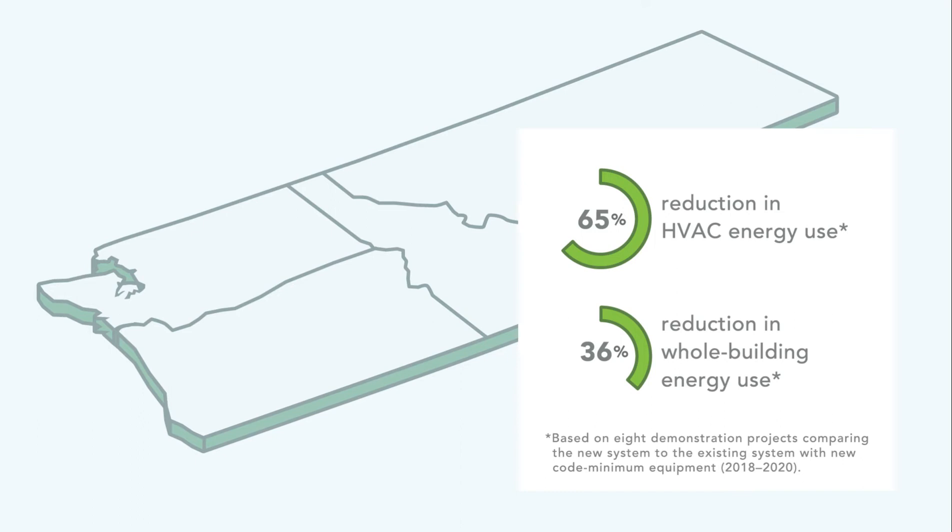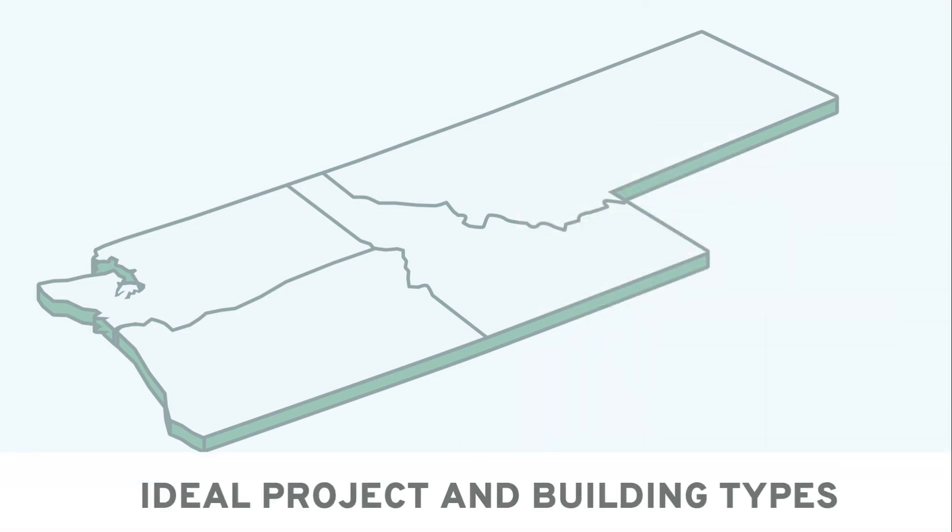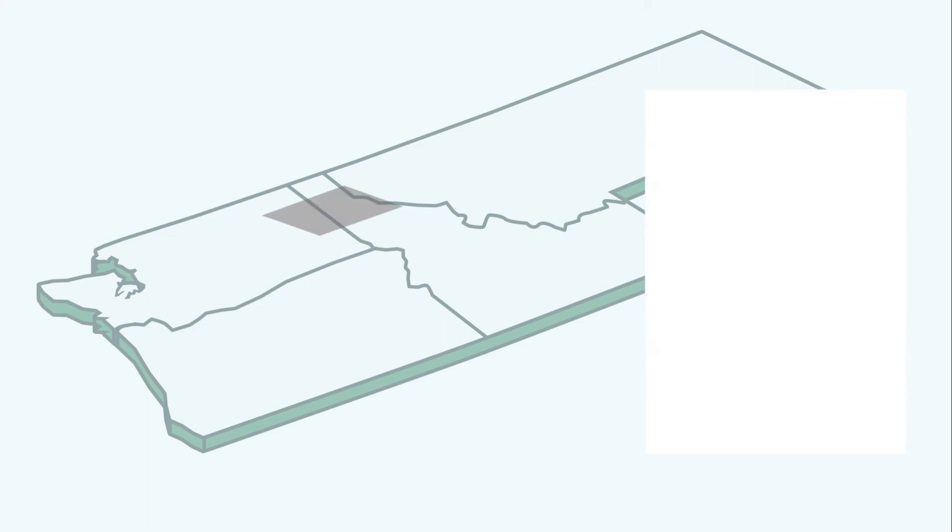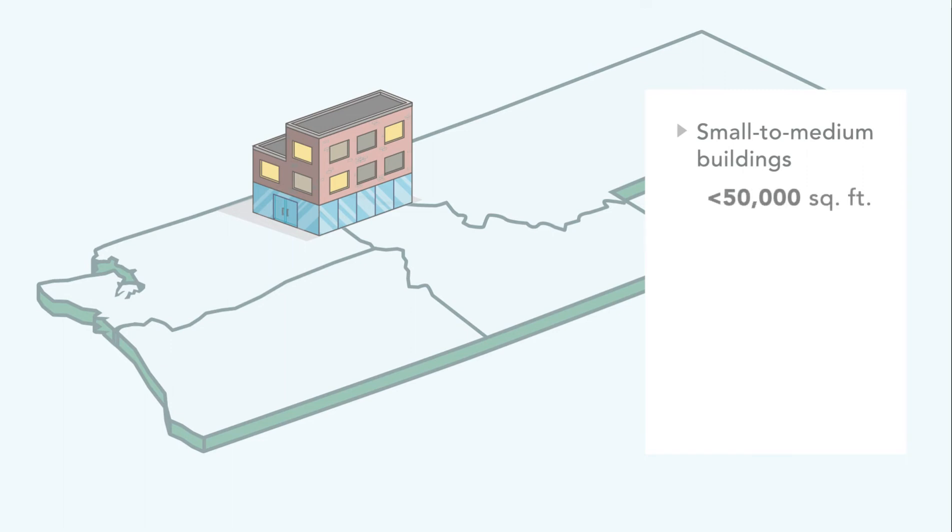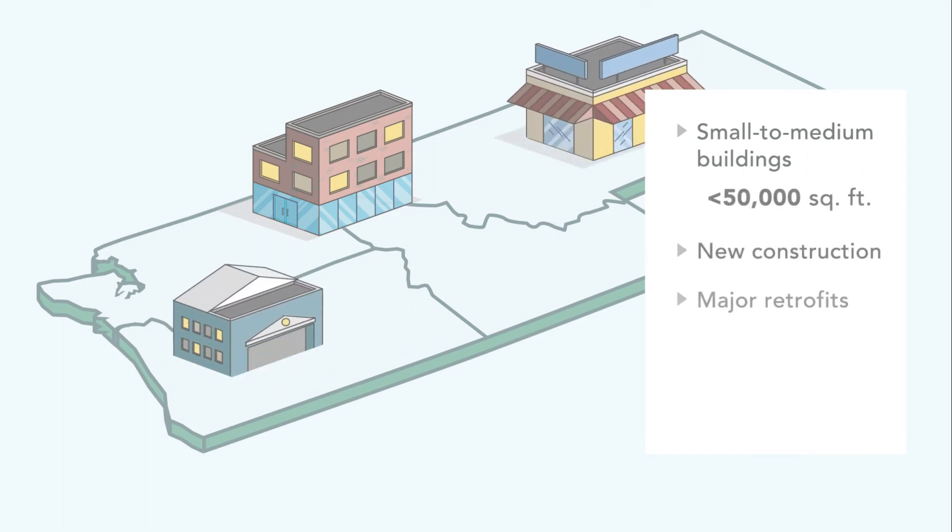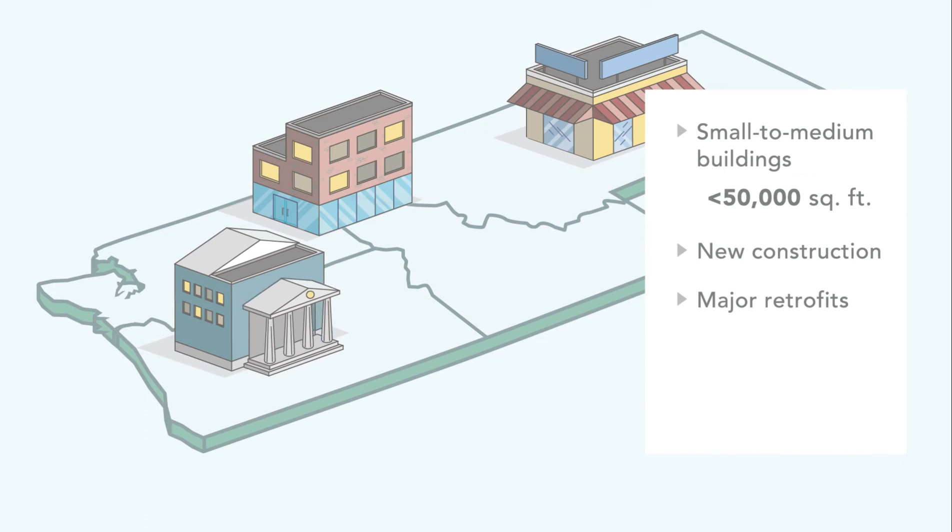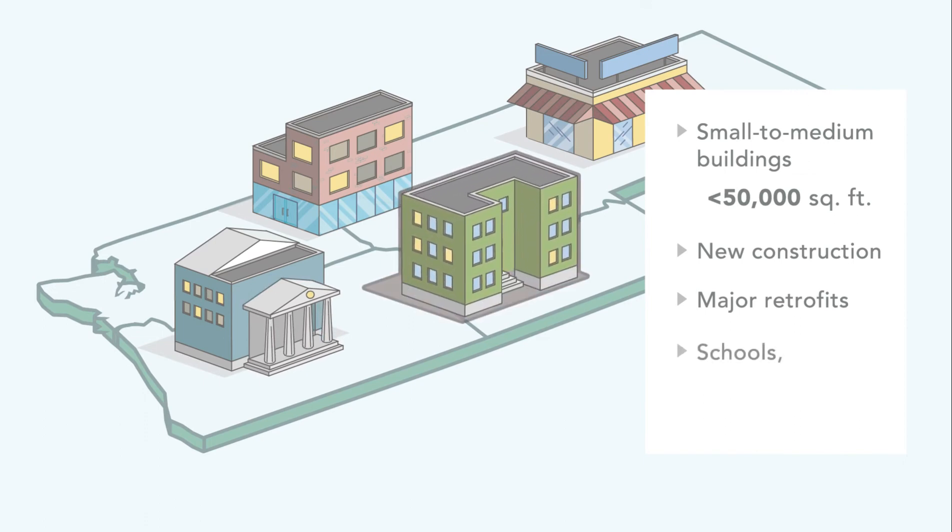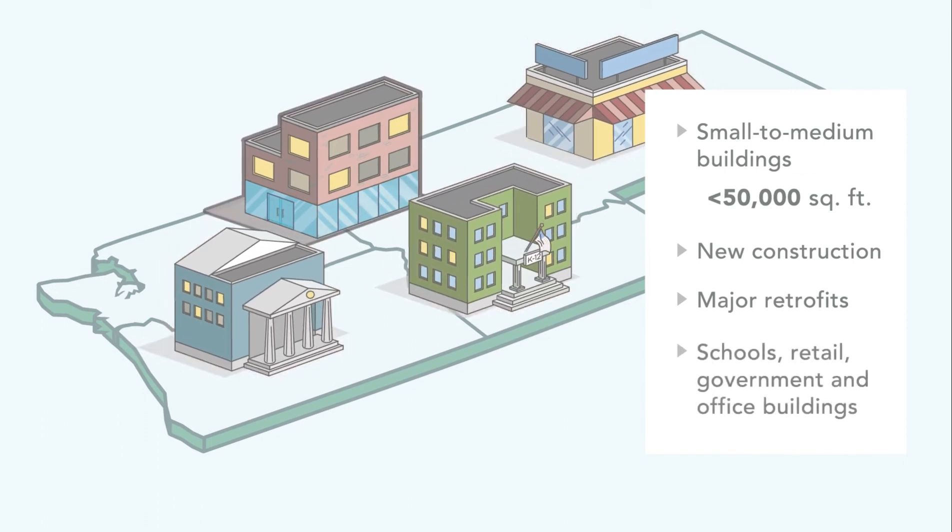In particular, these installations have revealed some ideal project and building types that can benefit from this approach, including small to medium buildings less than 50,000 square feet, both new construction and major renovations, and several applicable building types including schools, retail, government, and office buildings.